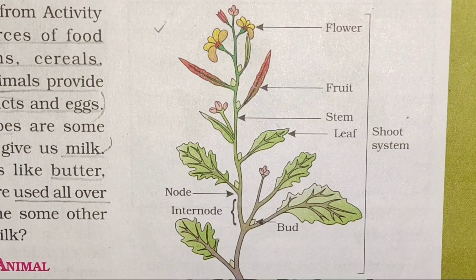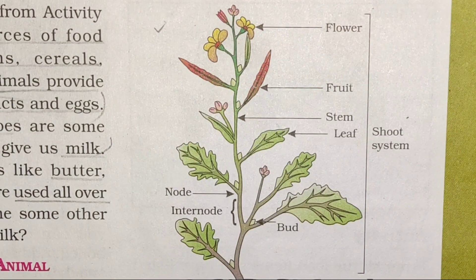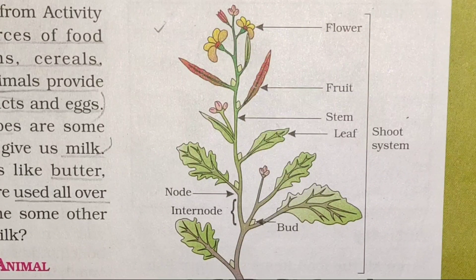From Chapter 1, the diagram we have already practiced is from page number 3 of your NCERT book — Figure number 1.4: Different Edible Parts of the Plants. You can do the labellings from your NCERT book. Just to repeat again: Figure number 1.4, Different Edible Parts of Plants.